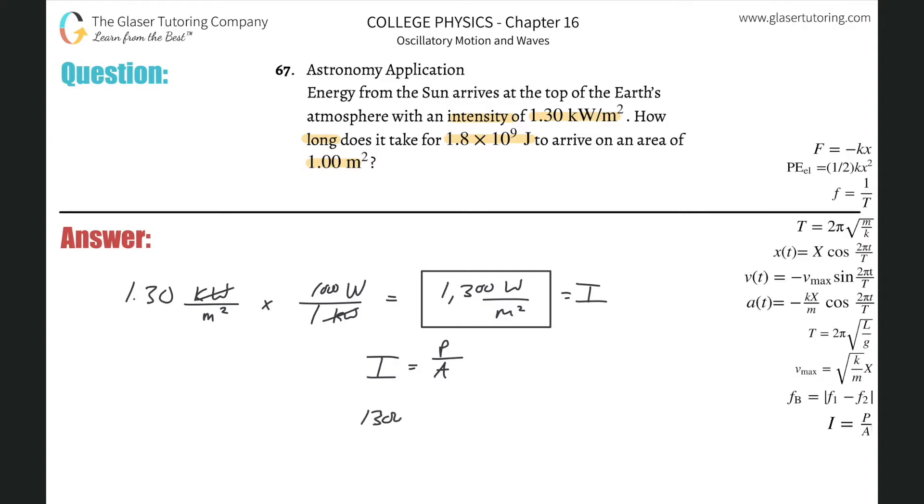So intensity is 1,300. The power divided by the area, it's one meter square. So we have consistent units there. So the power is simply 1,300. And what is that? 1,300 watts.